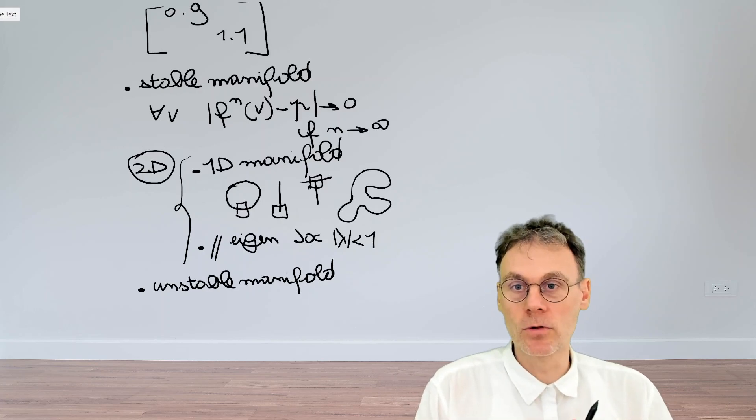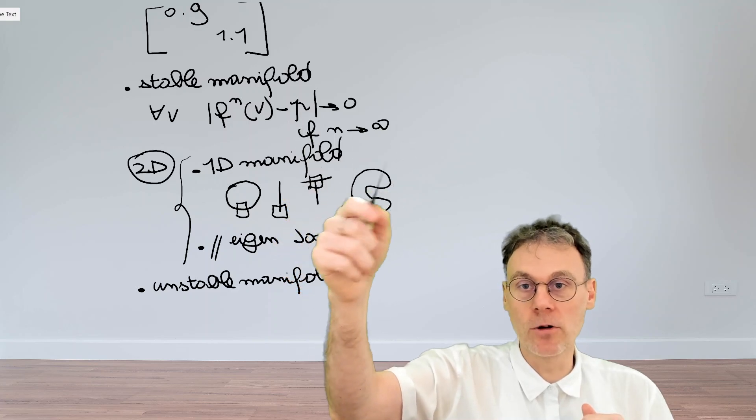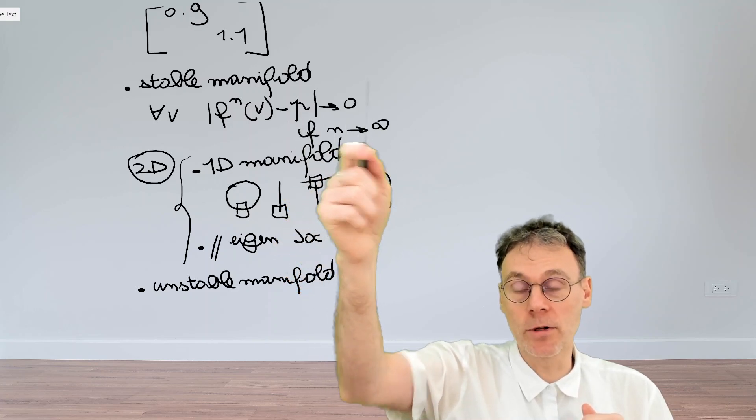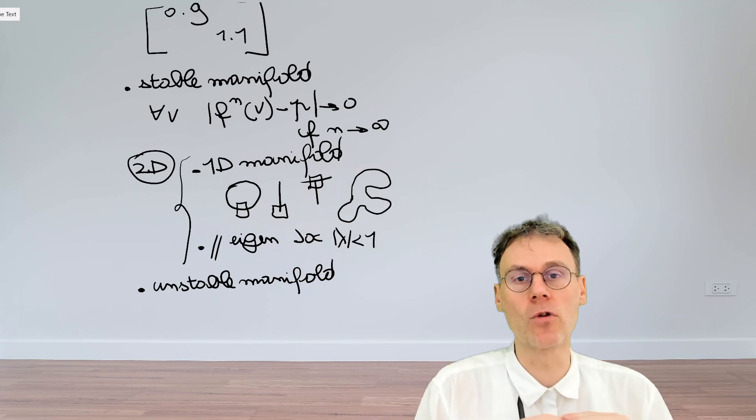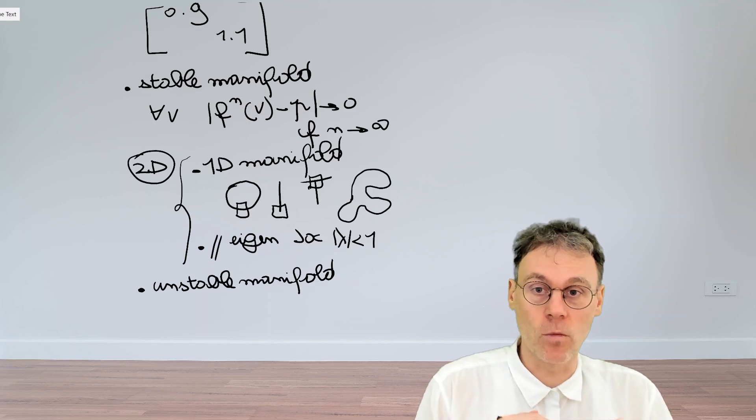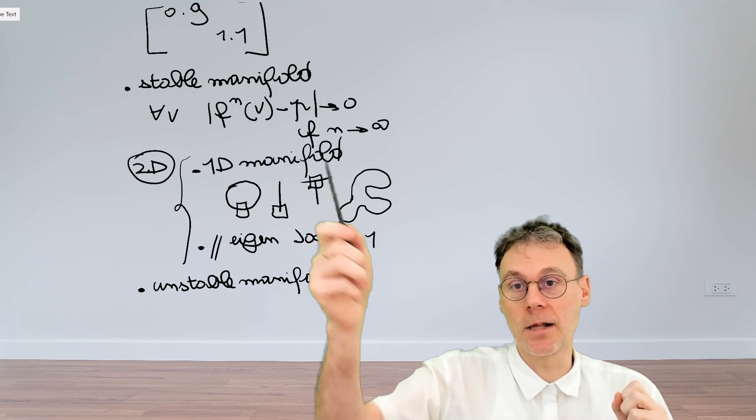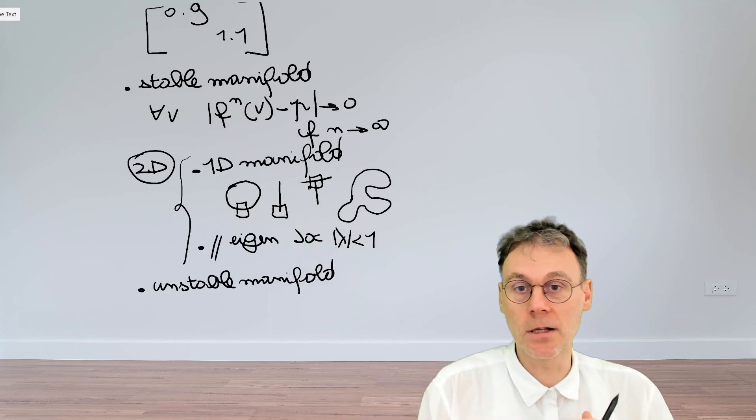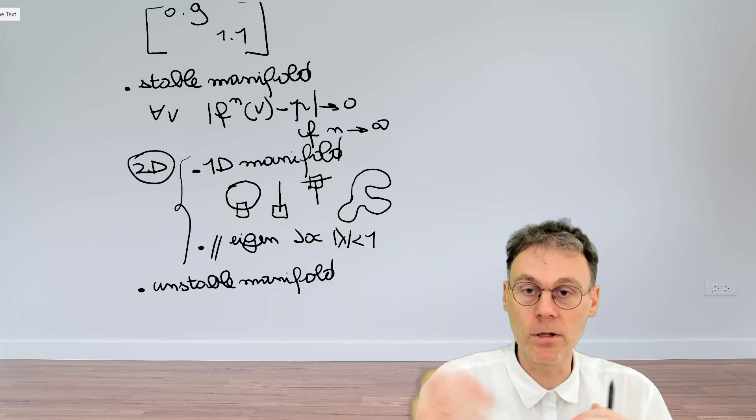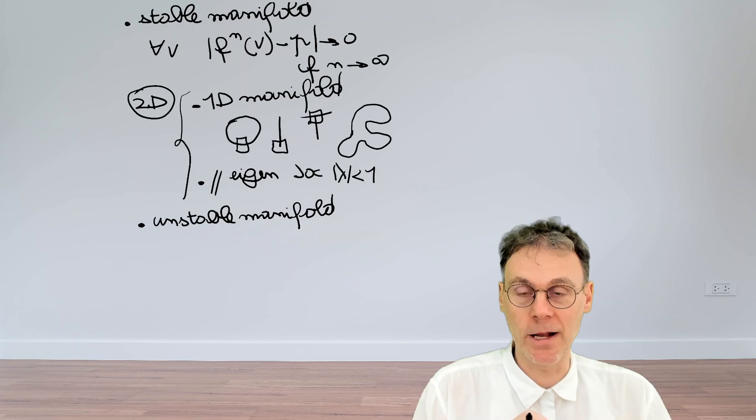So you might be tempted to try and write down something like this equation over here but where the limit for n going towards infinity is not zero but actually infinity. But there's a number of things wrong with that definition. First of all that would not only capture all the points on the y-axis but basically every point which is not on the x-axis so it's much too broad as a definition and moreover that limit here it's not even guaranteed that that exists. You could end up at some sort of periodic point and then the structure does not have a limit. So you need to be a little bit more creative in trying to come up with a definition for the unstable manifold.